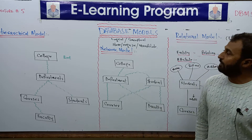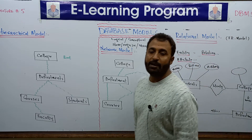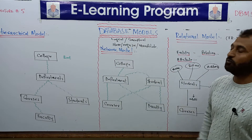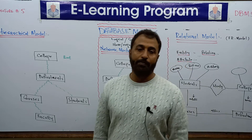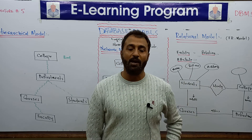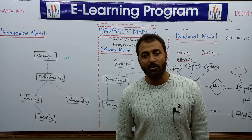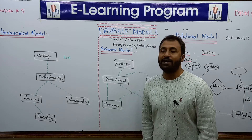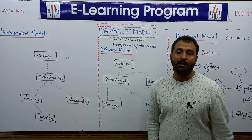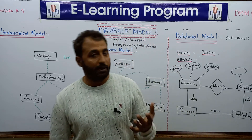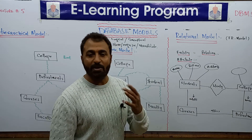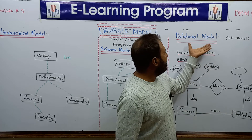We need to understand the three important models of data. The first two models — the hierarchical model and the network model — are no longer used. But as a step-by-step improvement happened, it is necessary to learn their history. That is why we study the hierarchical model, its problems, why we shifted to the network model, and then why we shifted from network to the relational model. Today, databases are working on the relational model.